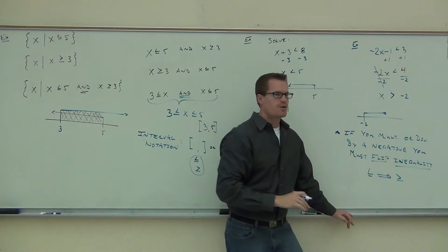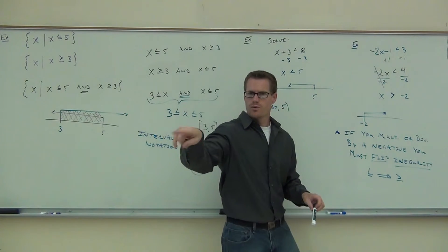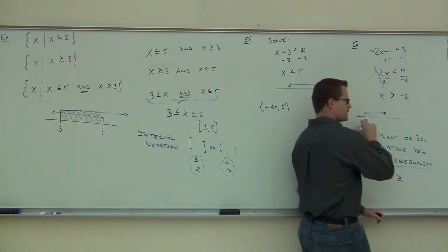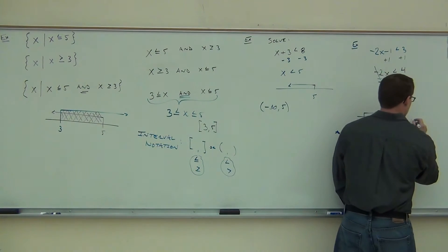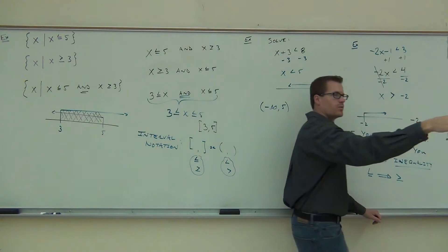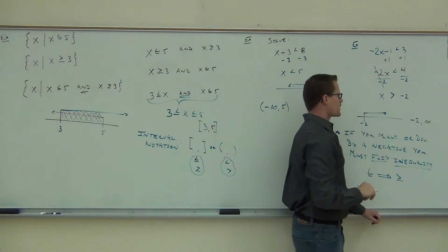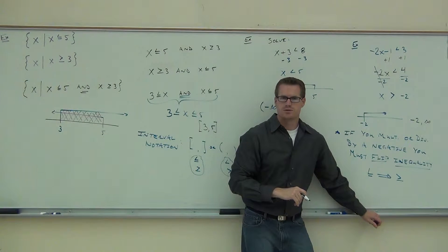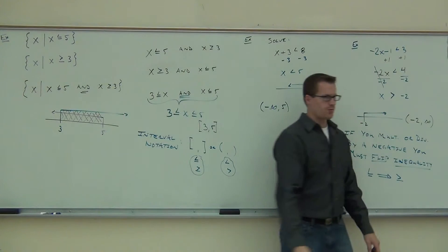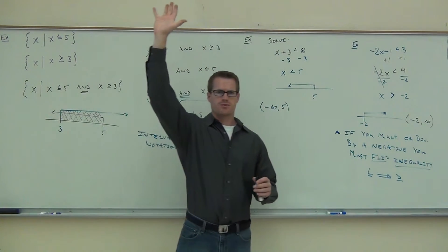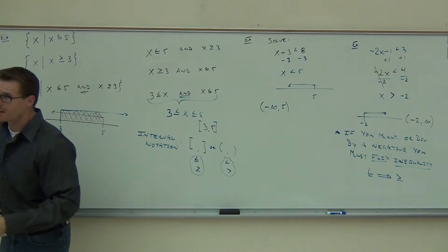We're talking about all these numbers. If we do the interval notation, which you're also going to have to do, where's my interval going to start? It's going to start at negative infinity. Are we going to use a bracket or parentheses on negative 2? We actually always use a parenthesis for infinity. I feel okay with this so far — try a couple on your own. We are going to be doing a lot of that in this class.